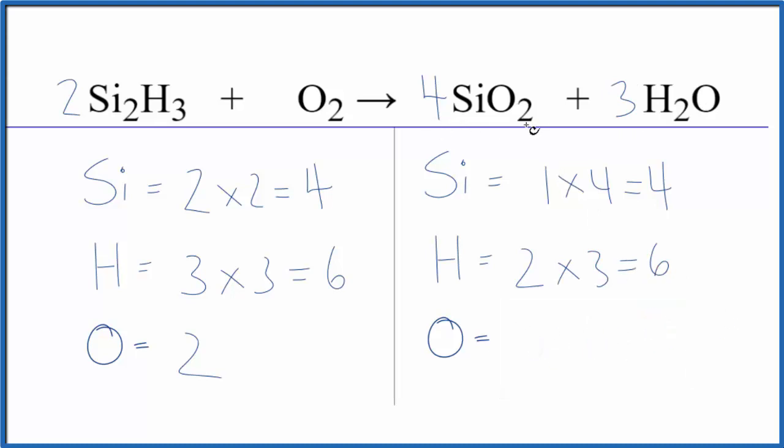So now I have 4 times 2, that's 8, plus I have 3 times the 1, that gives me 11. So everything is balanced right now except these oxygen atoms, and I have 11 and 2. So to fix that, we can use a bit of a trick.